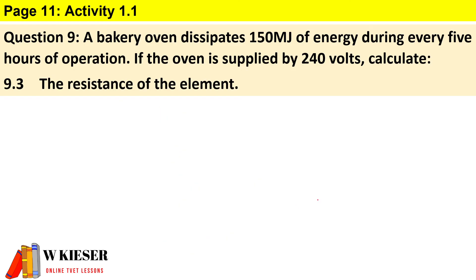Question 9.3: Calculate the resistance of the element. Here we can use Ohm's law: voltage divided by current. The voltage is 240 volts, and the current from the previous calculation is 34.721.